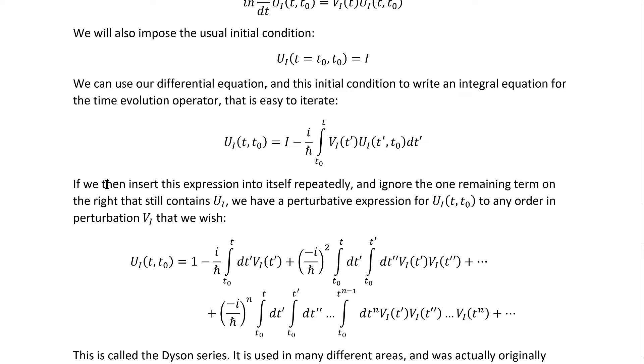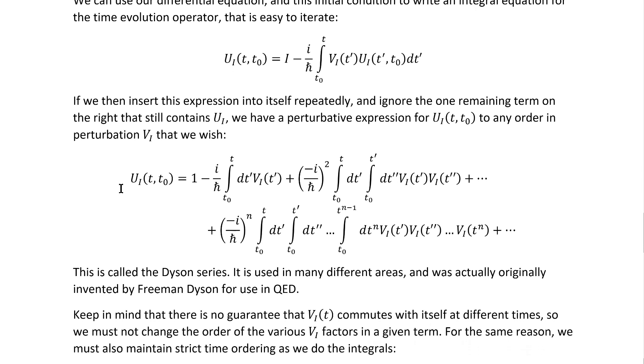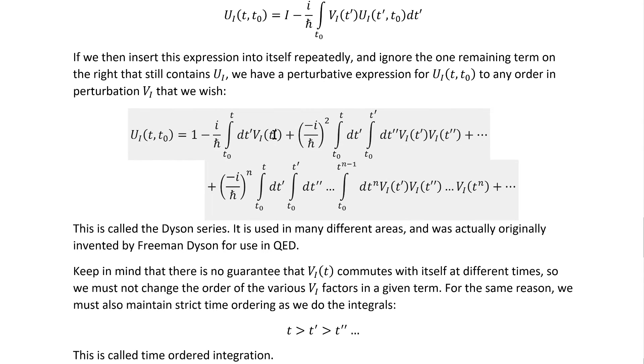If we then insert this expression into itself repeatedly and ignore the one remaining term on the right that still contains UI, we have a perturbative expression for UI(t, t0) to any order in perturbation theory VI that we wish. It's pretty straightforward to just write out the general case.